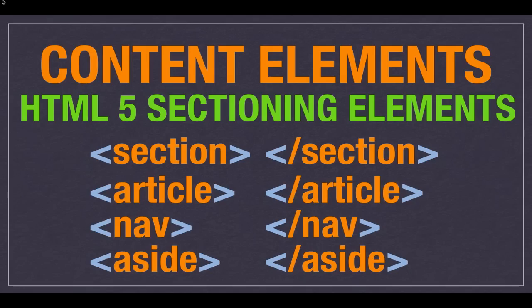The third sectioning element is nav, which is for navigation — but really only for the major navigation on the page. If it's a smaller side nav that doesn't relate to the main navigation, you wouldn't use this. The fourth is aside, which can be a little tricky. Aside is something related to the main content of the page but only tangentially — meaning it's somewhat related but not fully. If you took it out, it's not going to take away any meaning from the main part, but it does relate to it. An example would be information about the author of a blog post placed in an aside.